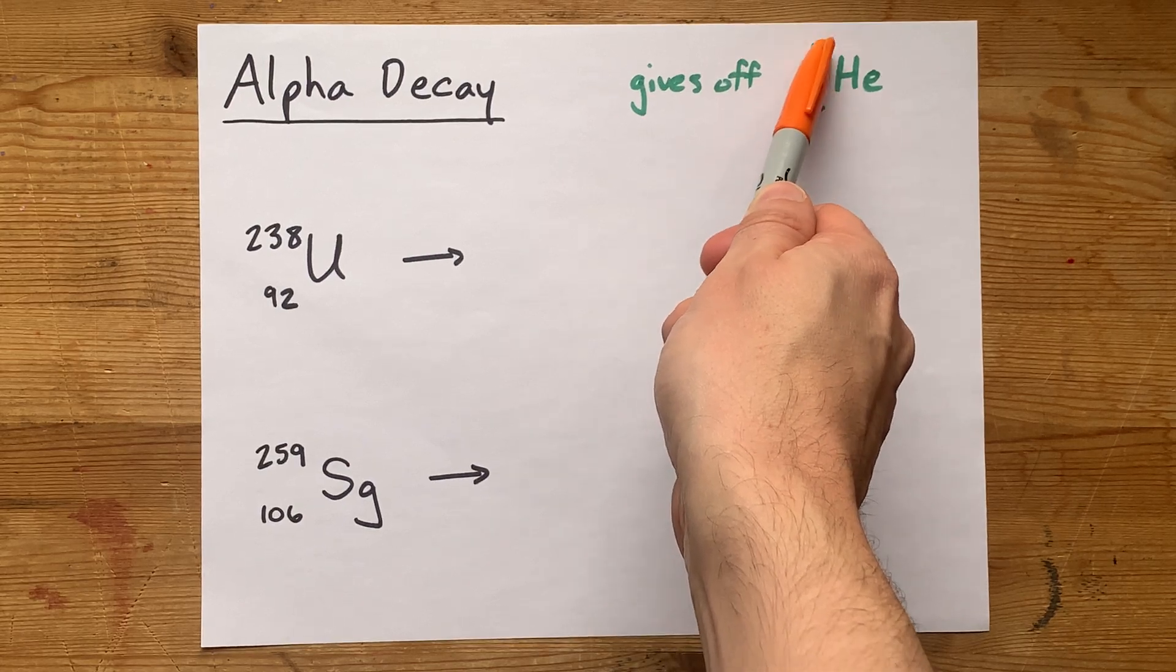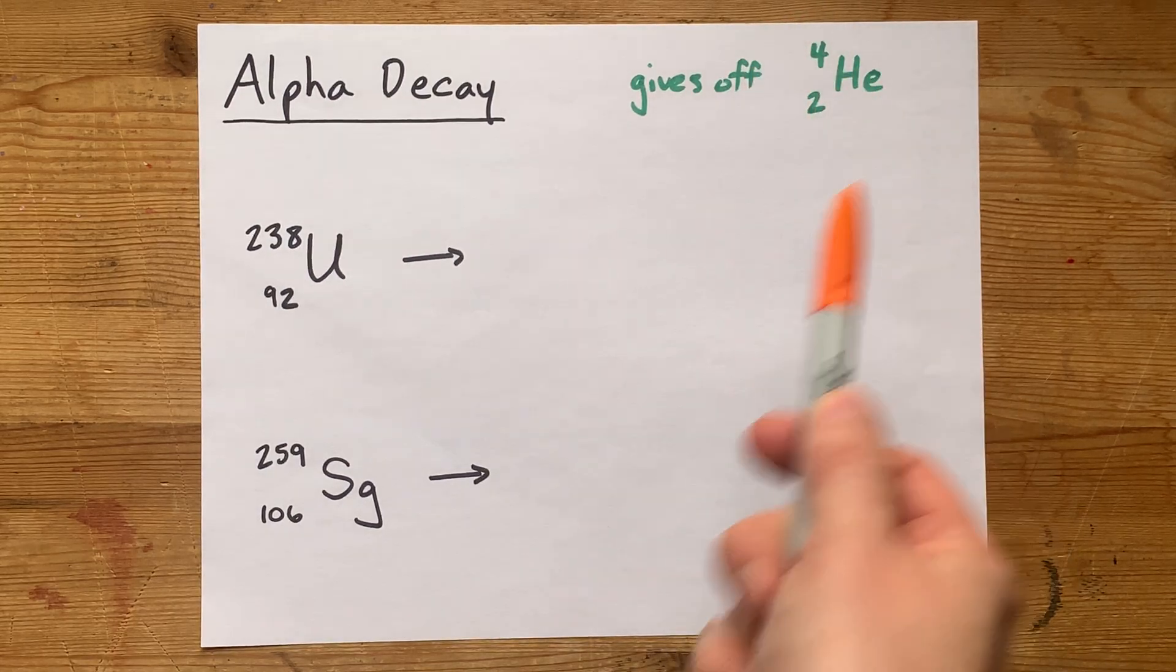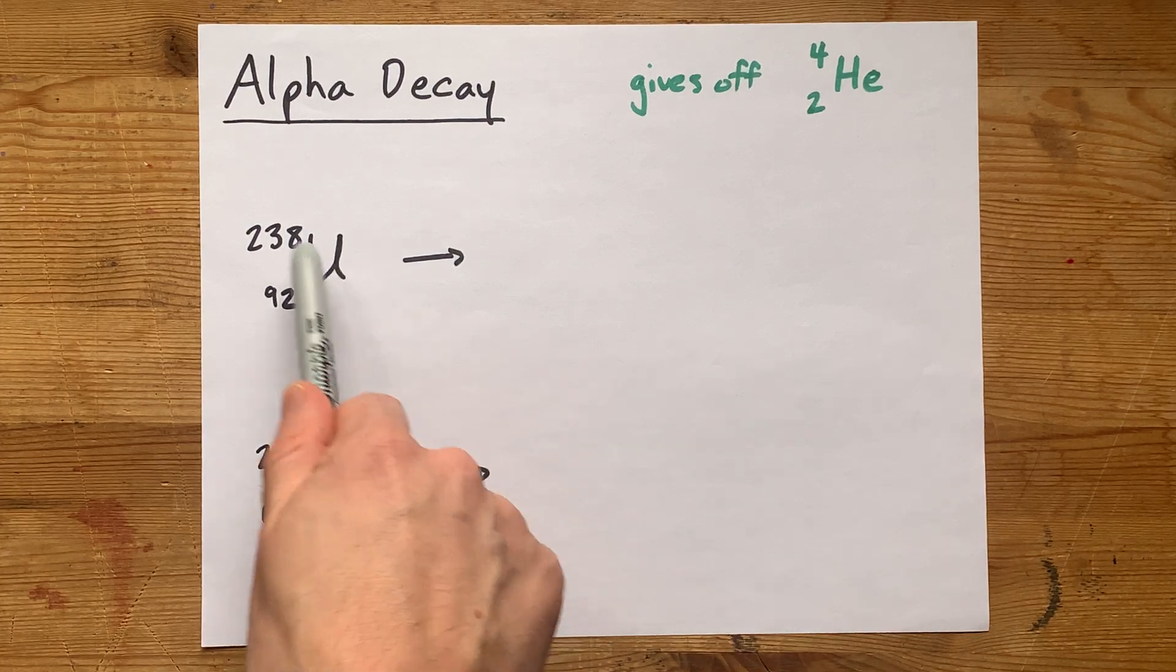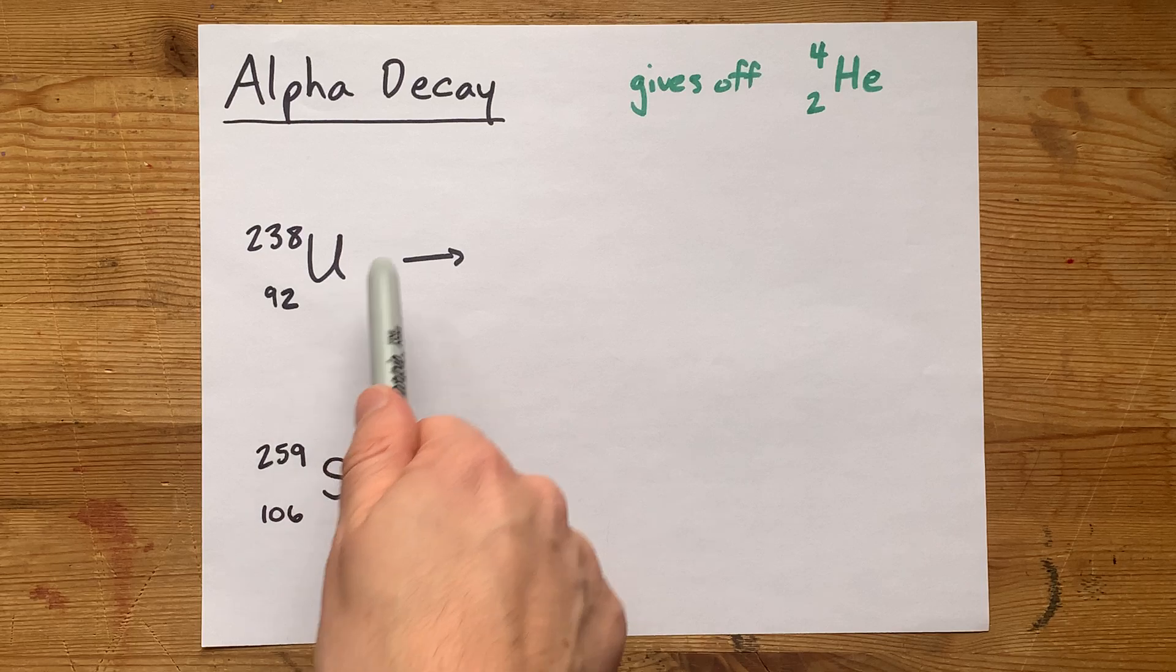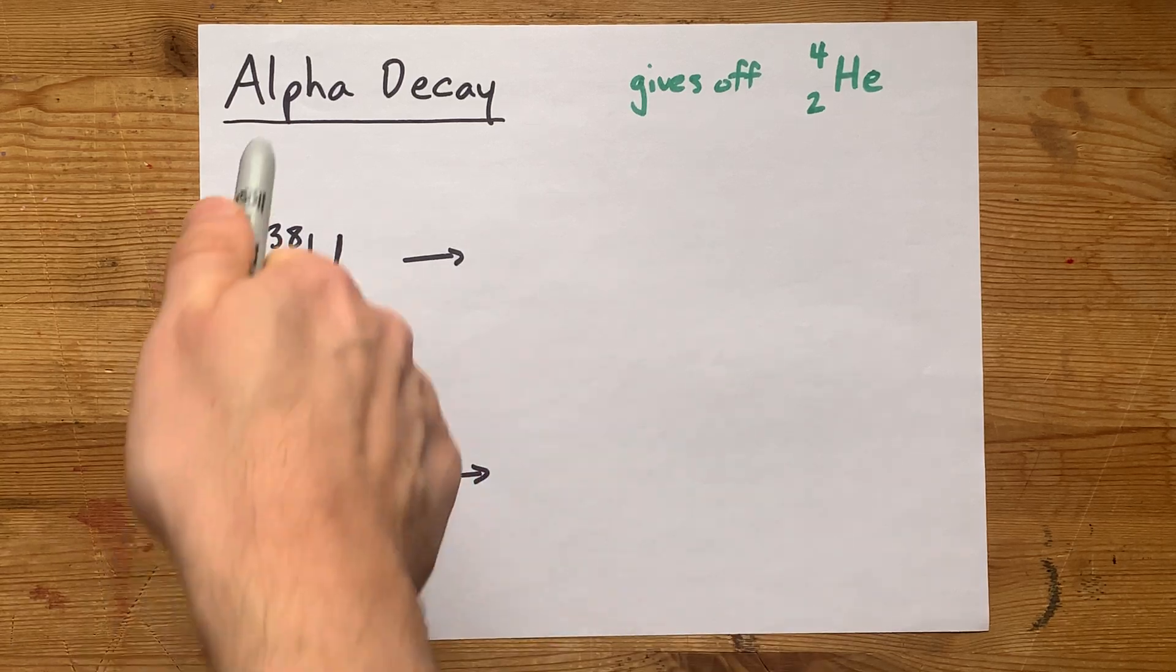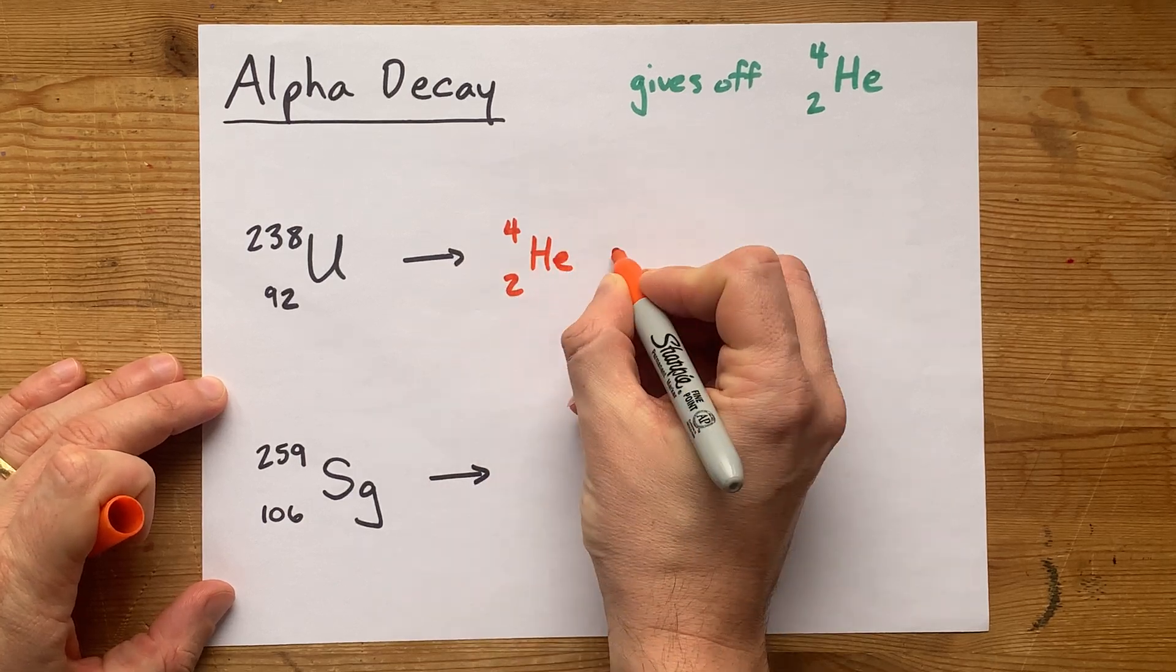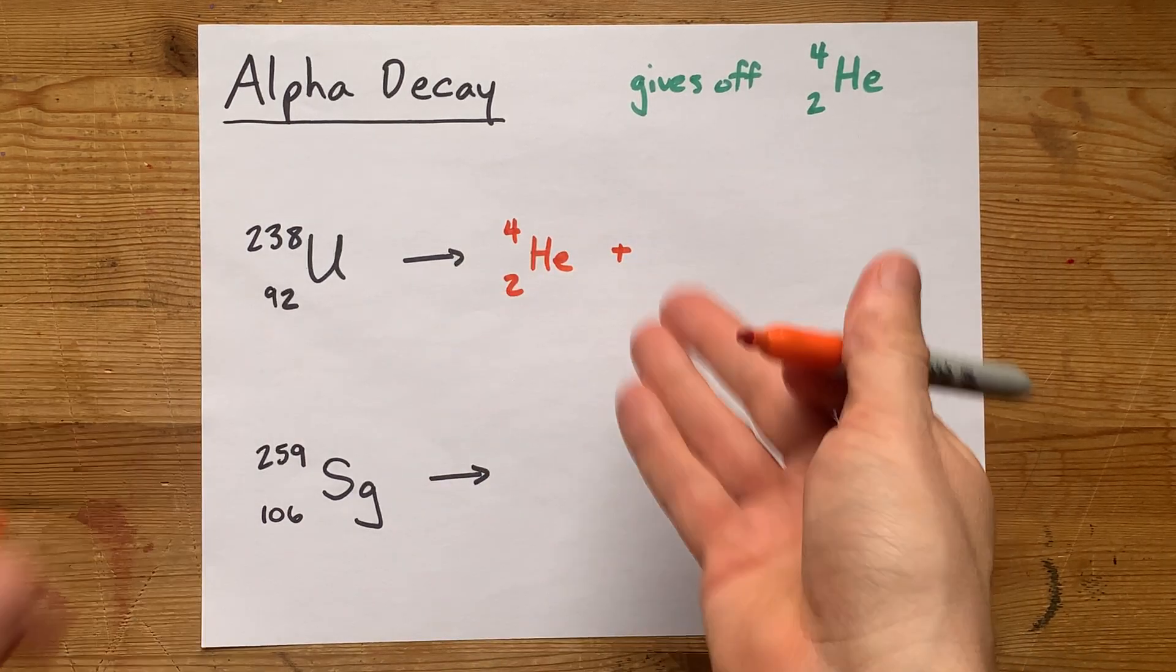This number up here is the sum of protons and neutrons, also known as the mass number. Now here we have uranium-238 breaking apart. Well, if it's alpha decay, it's going to give you an alpha particle, and then you're going to have to figure out what the leftovers are.